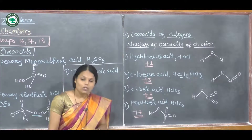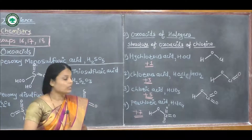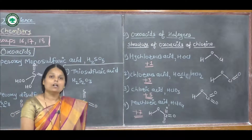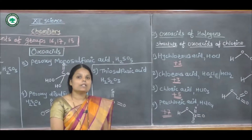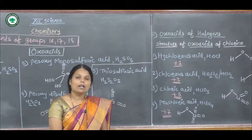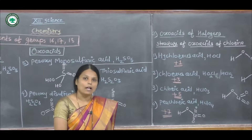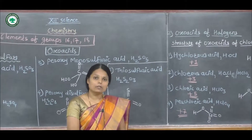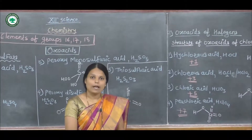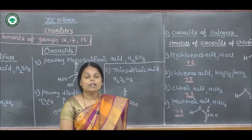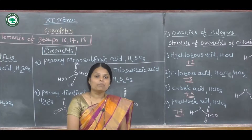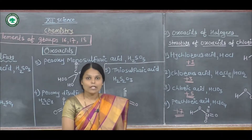Today we studied two topics: the oxoacids of sulfur and the oxoacids of halogen. We discussed the formulas and structures of these oxoacids. In the next lecture, we will discuss the next topic in this chapter. Thank you.